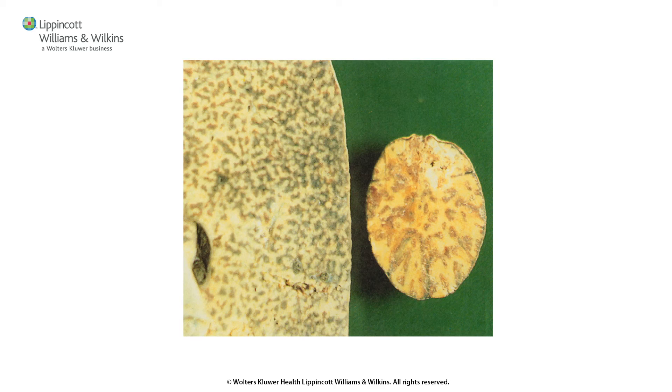Right-sided failure can also cause hepatic congestion — blood backs up into the inferior vena cava and into the liver, causing hepatomegaly. On biopsy or autopsy the liver looks mottled, resembling a nutmeg seed — called nutmeg liver — from chronic passive congestion due to right-sided heart failure. R for right, R for the rest of the body.